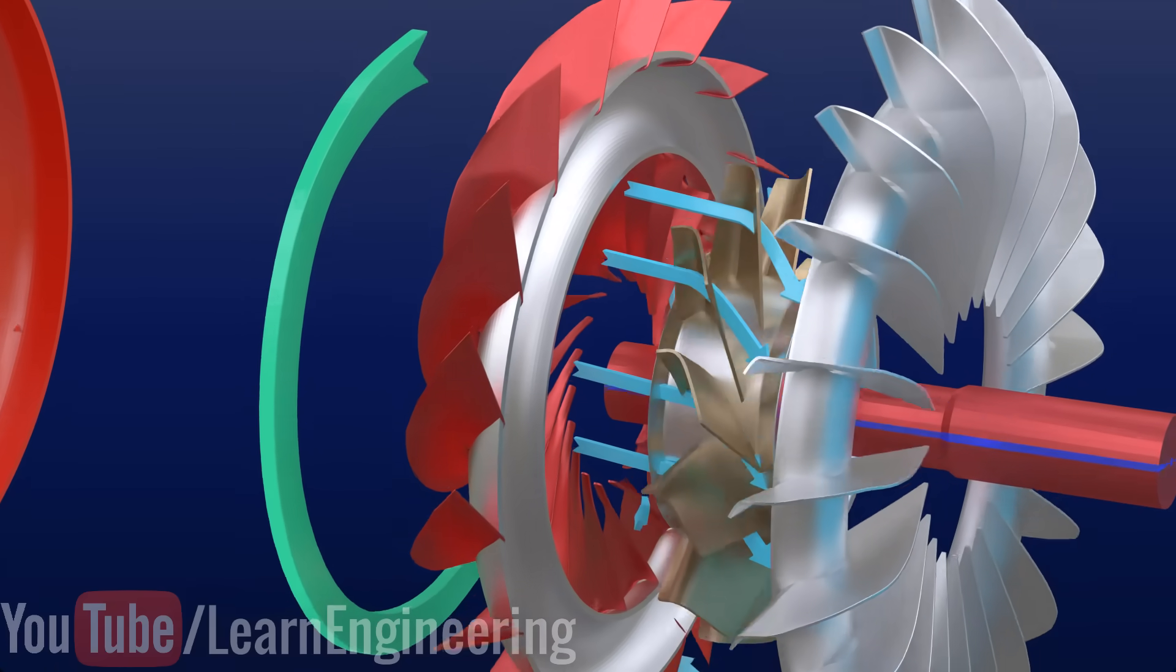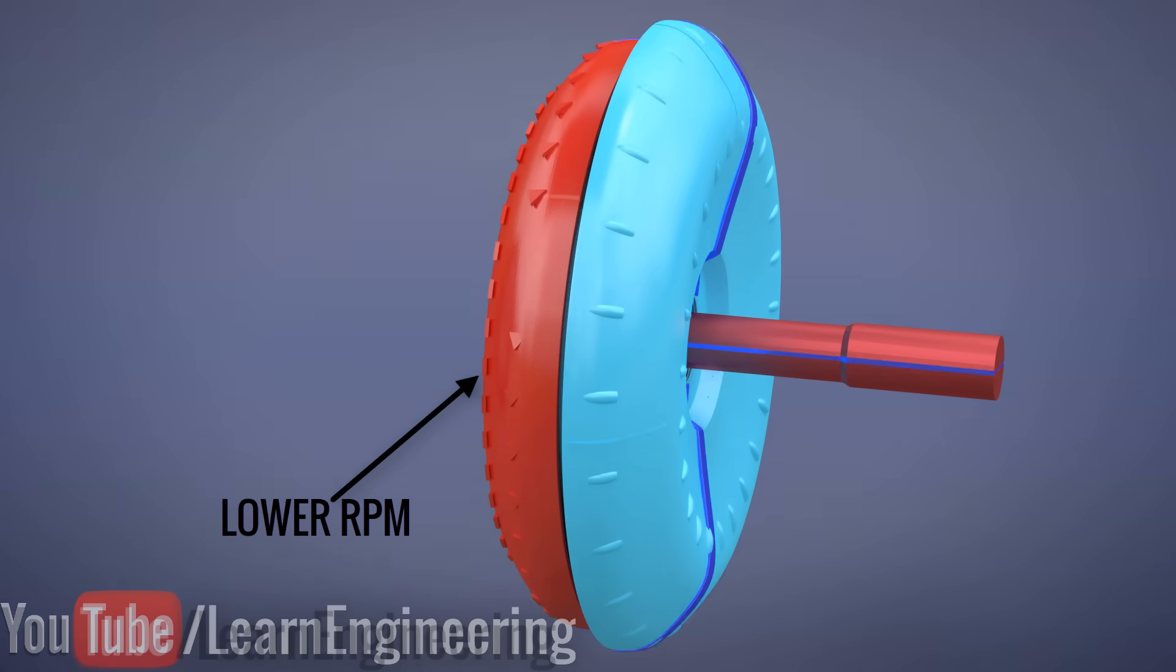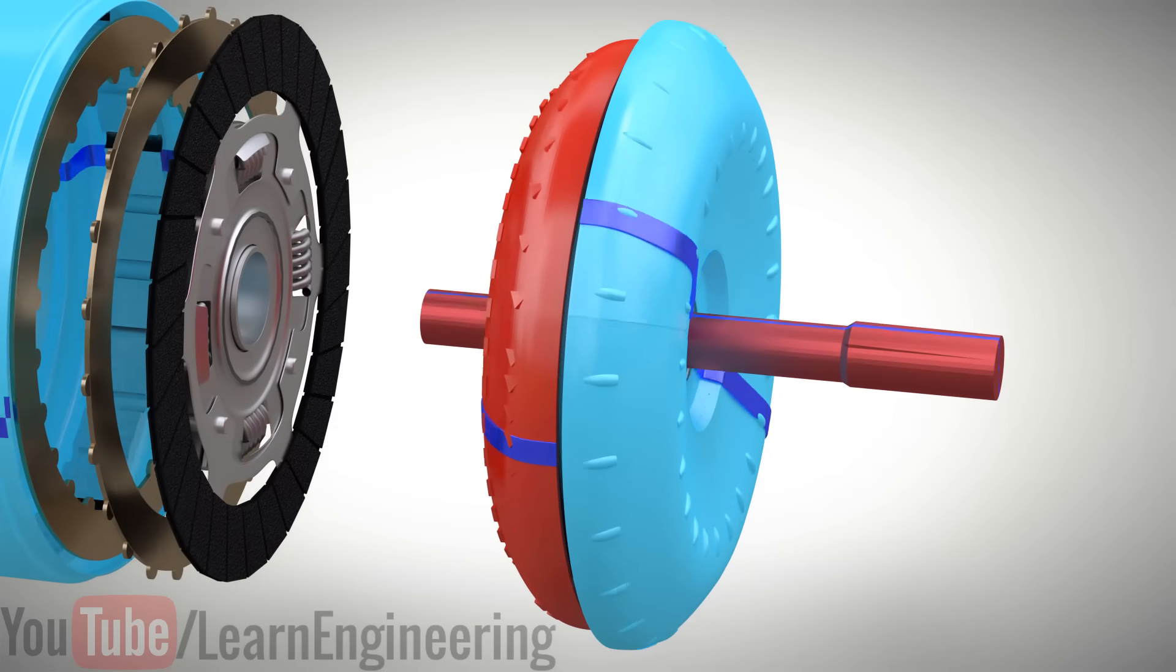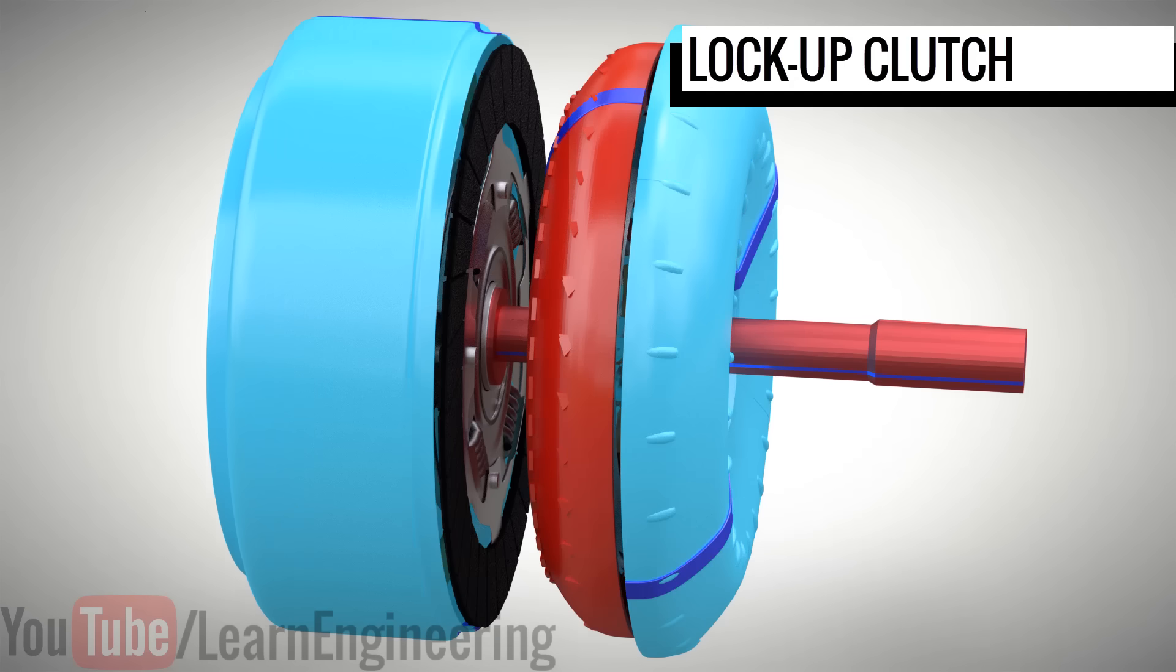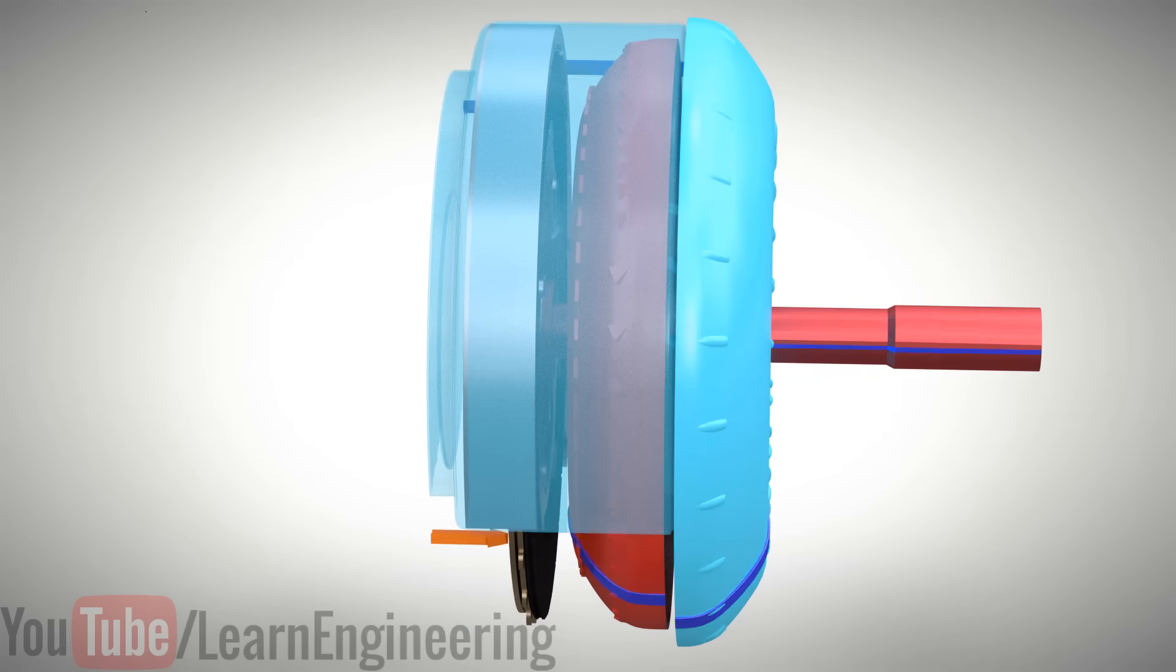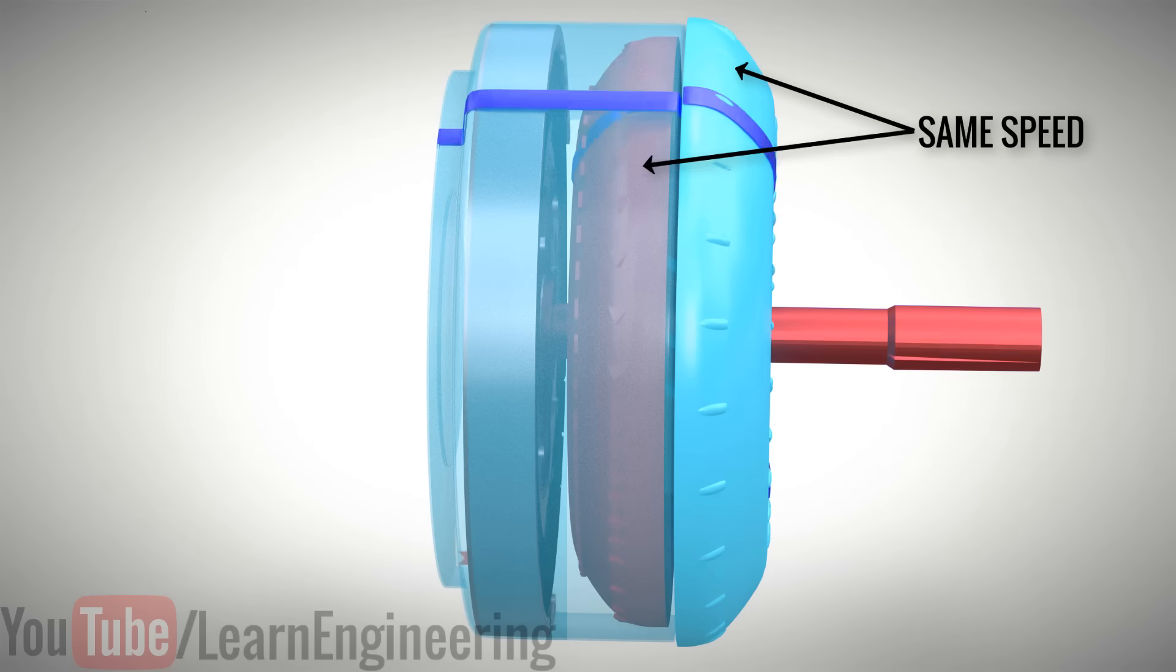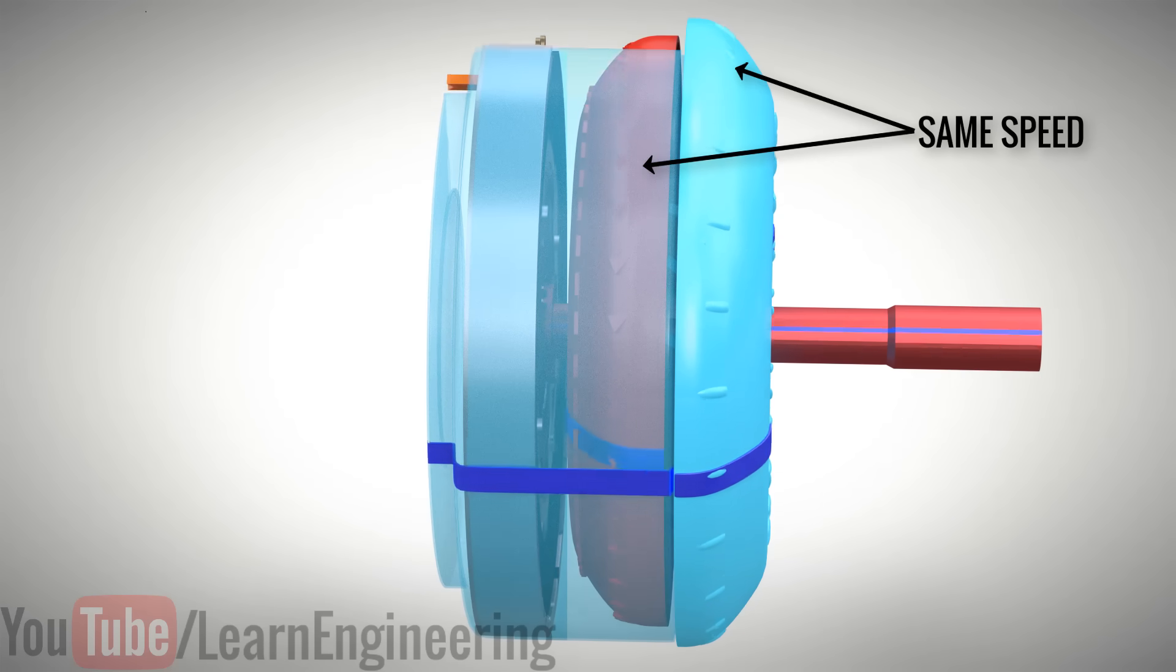Even in normal operation, you will find that the turbine turns slower than the pump in a torque converter. This is due to energy loss within the coupling fluid. To eliminate such energy losses, modern torque converters use a lock-up clutch. By activating this clutch during the normal operation, the turbine will be mechanically locked with the pump unit and they will turn at the same speed. This eliminates energy loss due to the fluid friction.